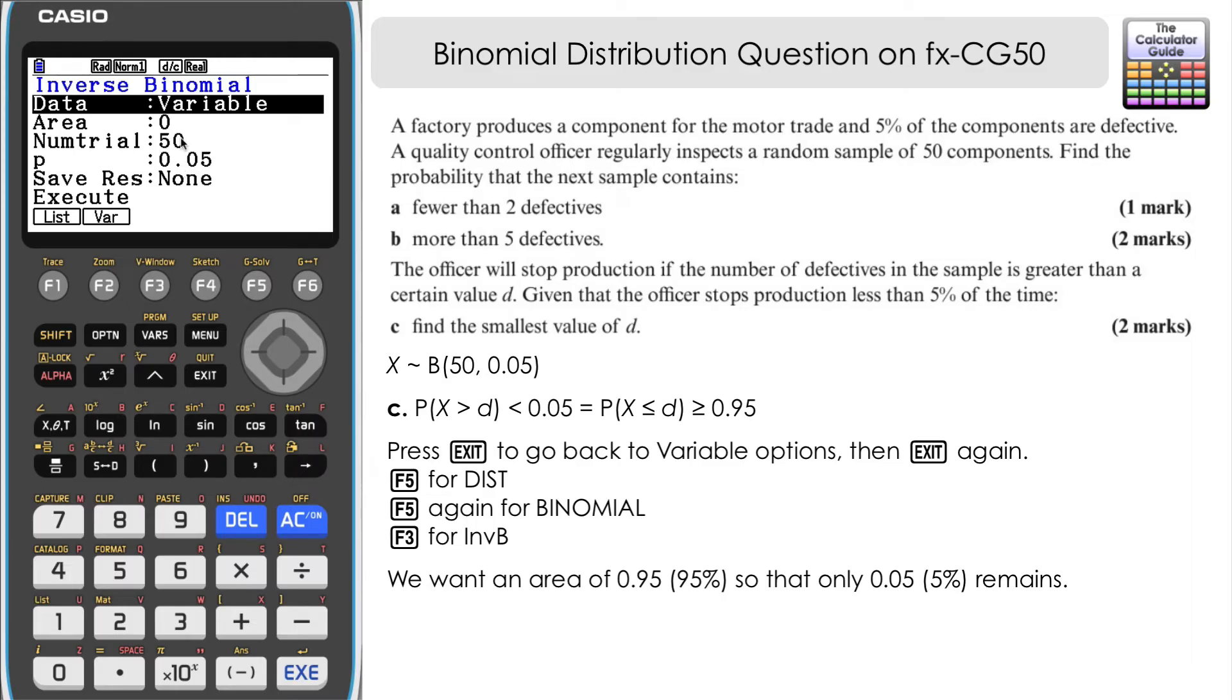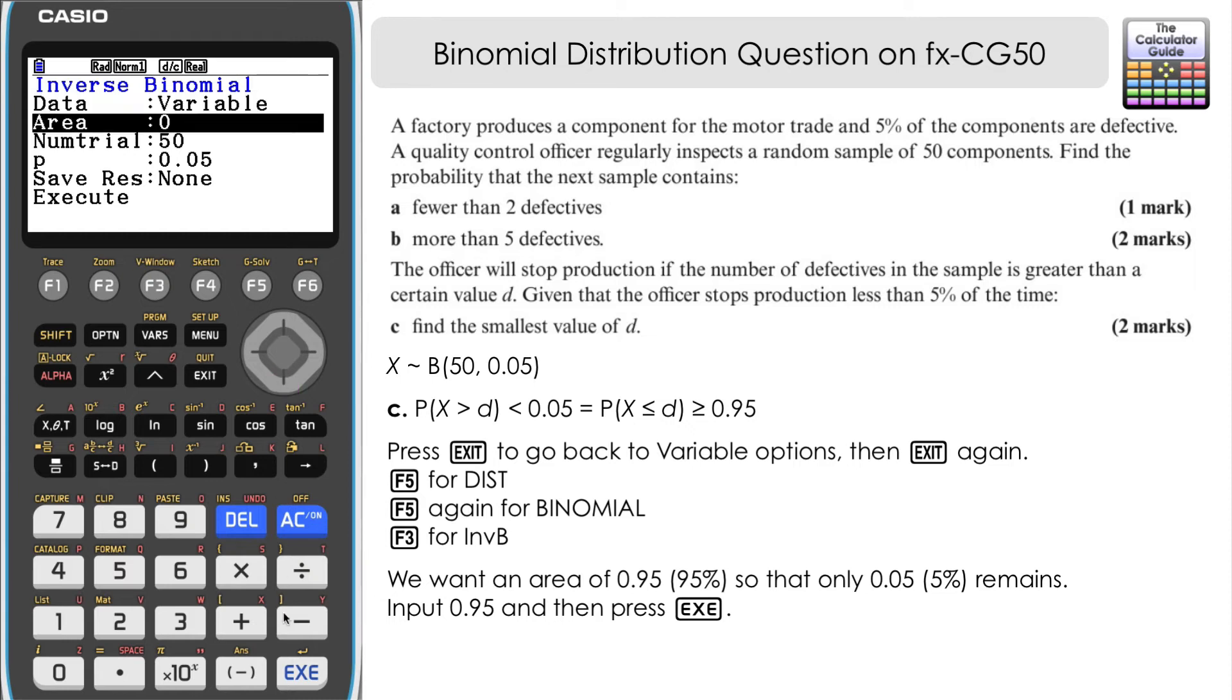The only thing that we want to change here is the area, i.e. the area that's covered. Now, let's just have a think about what the question is asking. Given that the officer stops production less than 5% of the time, that means that we want the area essentially to be 95 or greater for that to occur. So what we're going to do is we're going to use 0.95 and just consider that as like a limit, anything above that, the officer will have to stop the production.